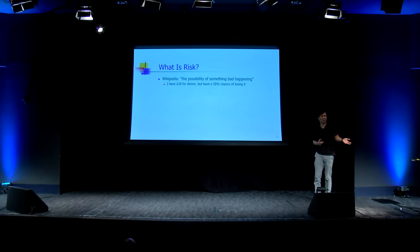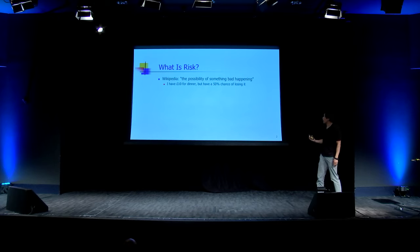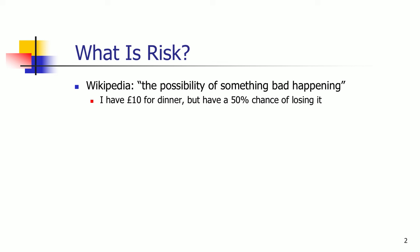Maybe a good place to start is to define what we mean by risk. You might think you didn't need to come to a Gresham College lecture to do that — you could have just looked it up on Wikipedia. What Wikipedia says is that risk is the possibility of something bad happening. Seems pretty uncontroversial. But in fact, that is not what I'm going to refer to as risk in today's lecture.